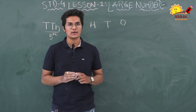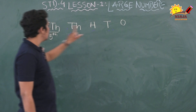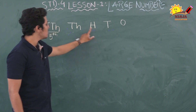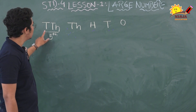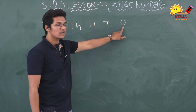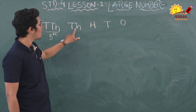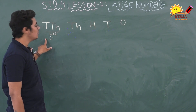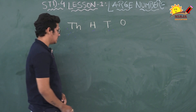In the place value chart, the 5th position from the right side is 10,000. The 1st position is ones, 2nd is tens, 3rd is hundreds, 4th is thousands, and the 5th is ten-thousands. So 10,000 is in the 5th position.